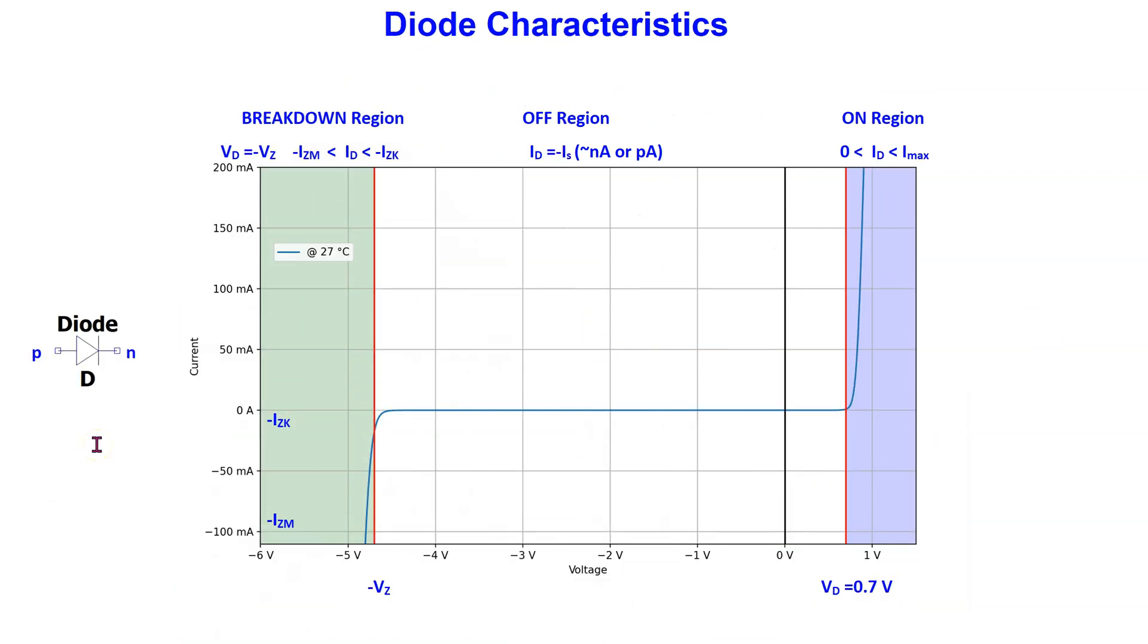Recall that a diode is constructed by joining a P-type semiconductor material with an N-type semiconductor material. The plot of the diode current ID versus the voltage VD is called the diode current voltage characteristics.